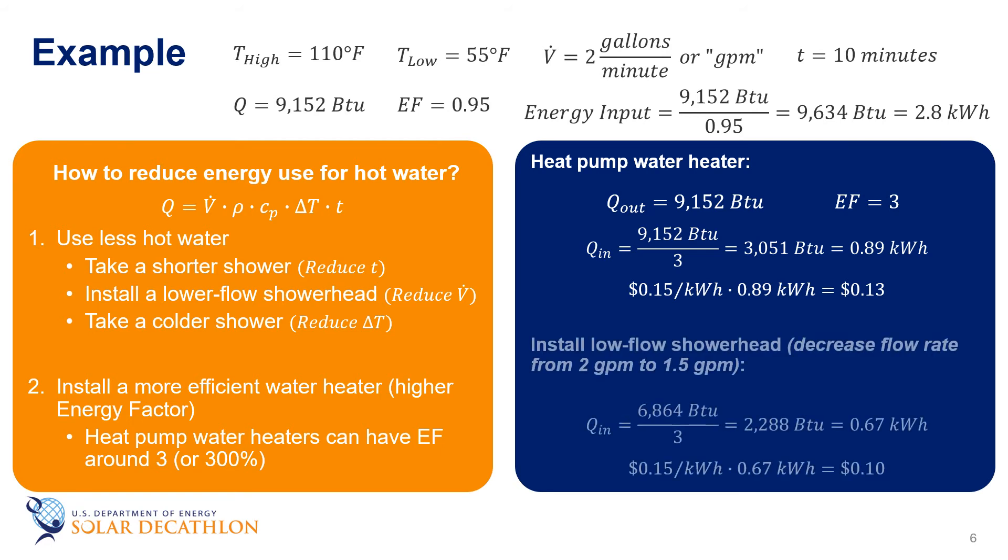We could also switch to a lower flow shower head, say one and a half gallons a minute, then the energy becomes 0.67 kilowatt hours or about 10 cents. That's a substantial savings from where we started from.